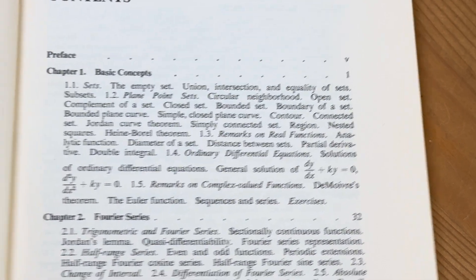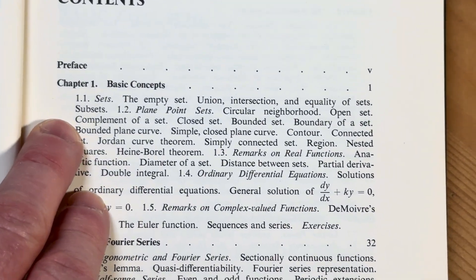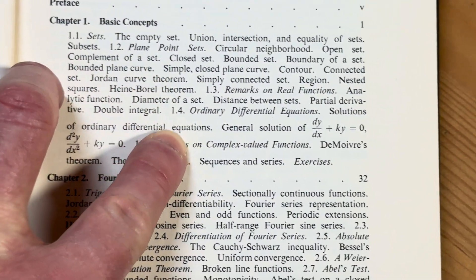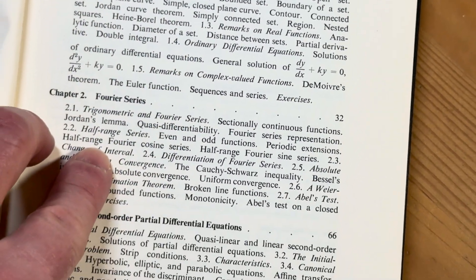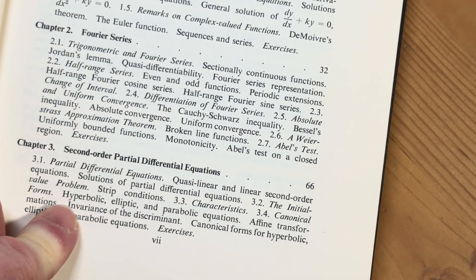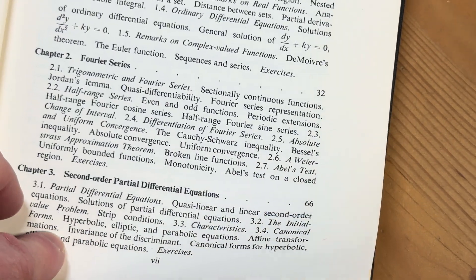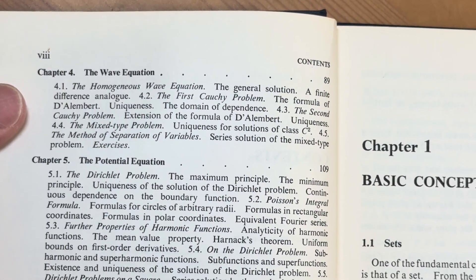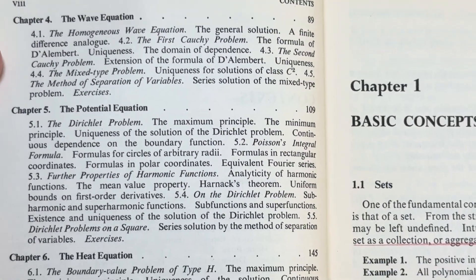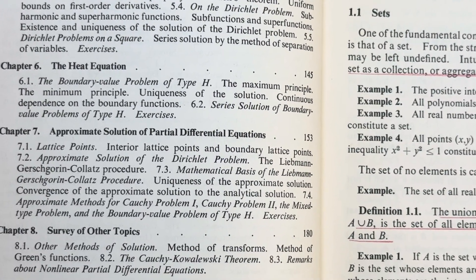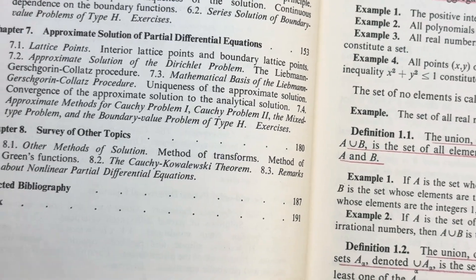Let's look at the topics here. So we've got basic concepts, empty set, union, intersect, really specific, right? And then Fourier series, second-order partial differential equations. Thick pages, it's an older book. Wave equation, the potential equation, the heat equation, and then approximate solution of the partial differential equations, and then survey of other topics.